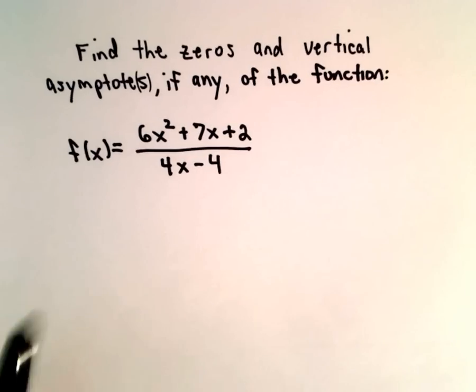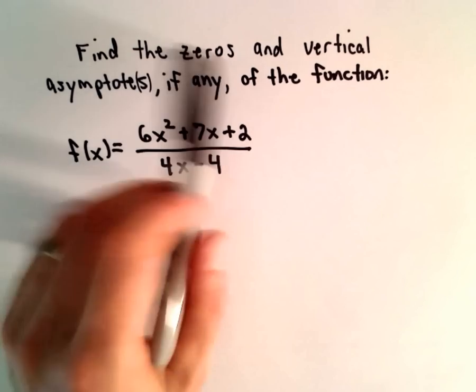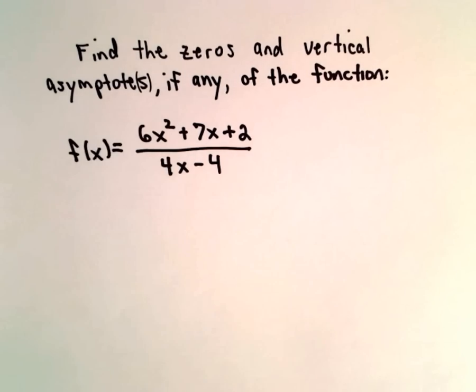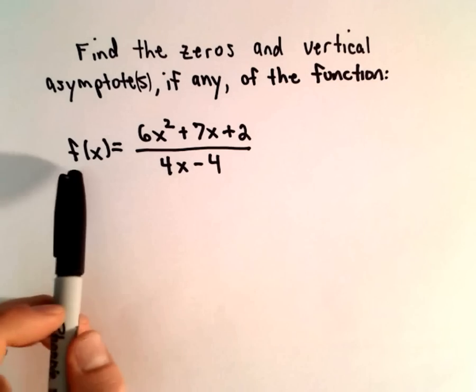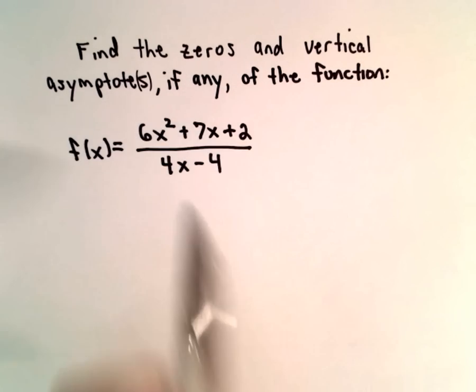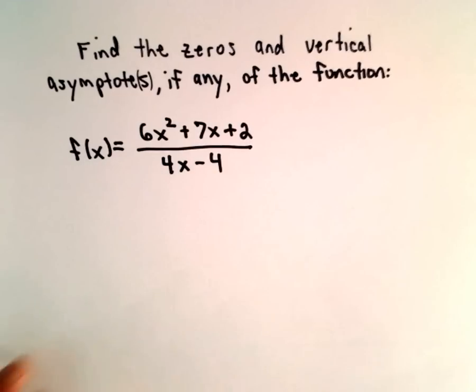Okay, here we're going to find the zeros and vertical asymptotes, if there are any, of the function f(x) = 6x² + 7x + 2 divided by 4x - 4.